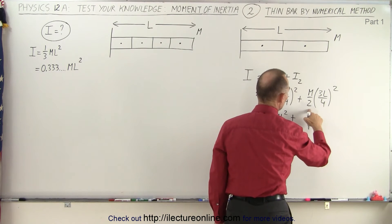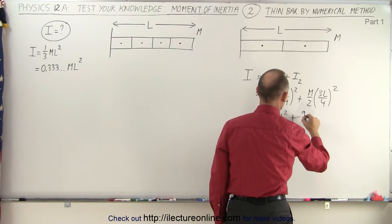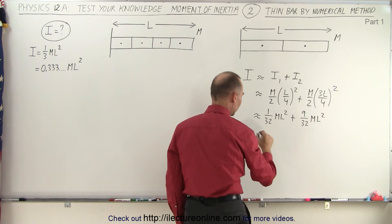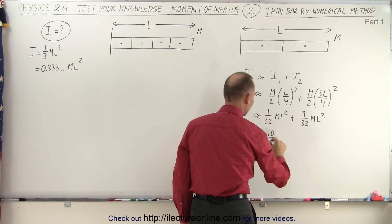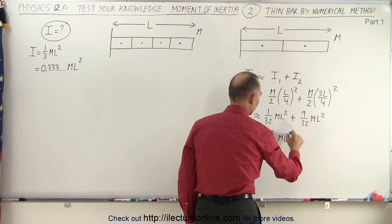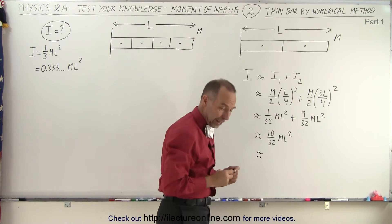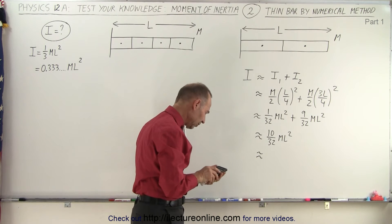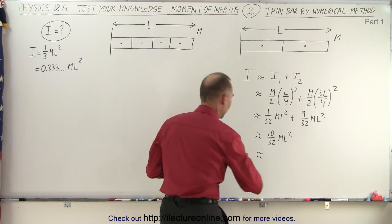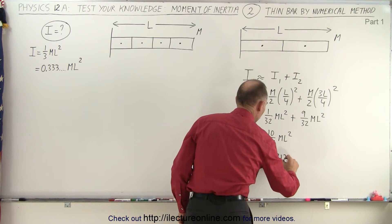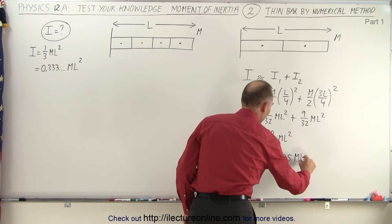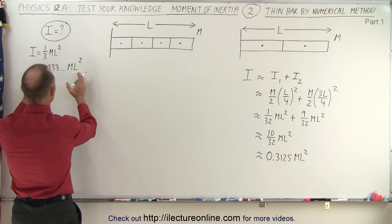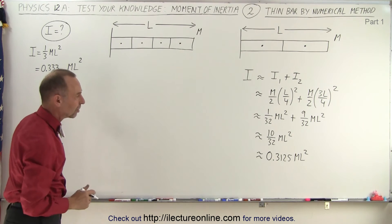Adding that up: 1 over 32 ml squared plus 9 over 32 ml squared gives us 10 over 32, which equals 0.3125 ml squared. Notice that with only two segments, we get very close to the actual value — not bad with two sections.